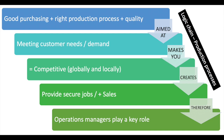Here's the logic chain. First, good purchasing — where you get your raw materials from for the things that you make: the plastic, the metal, the wood, the ingredients — plus the right production process: job, batch, or flow, with an emphasis on quality, is all aimed at keeping up with demand and meeting the needs of your customers. This should make your business competitive.